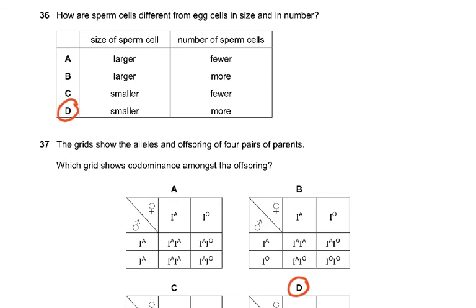Question 36: How are sperm cells different from egg cells in size and number? Size of the sperm is smaller and the number of sperm cells is much more as compared to the ovum. There's only one egg cell produced every month and there are millions of sperms produced every day.